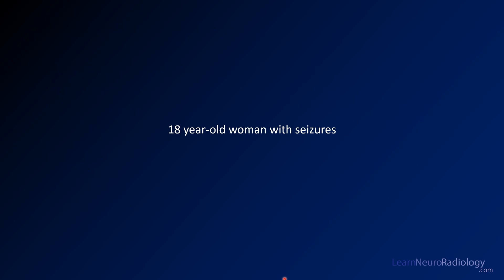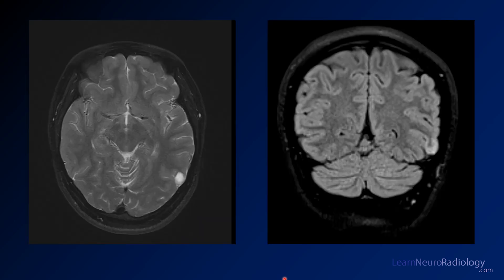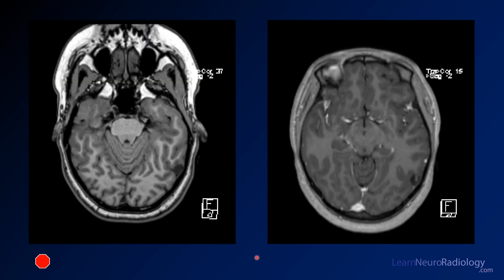For our second case, we have an 18-year-old woman with seizure. On the left, we have a T2-weighted image showing a well-marginated lesion in the left posterior temporal cortex — very bright on T2. On FLAIR, it's quite difficult to appreciate; you see somewhat ill-defined cortex in the posterior temporal lobe. On pre-contrast imaging, there's a T1 hypointense mass along the cortex, with maybe a thin linear bit of enhancement versus a small vessel.